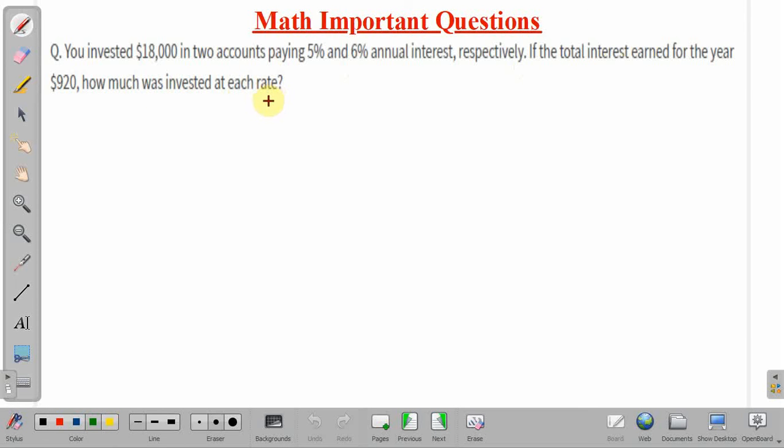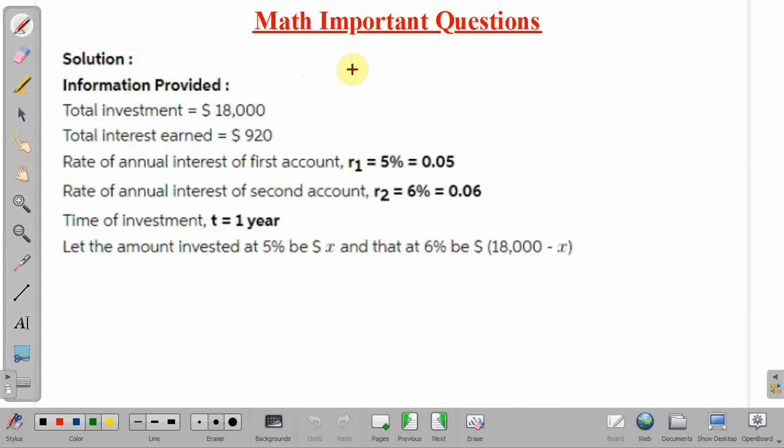So, a certain amount will be invested in one account paying 5% and the remaining amount is invested at 6%. How can we solve this? Total investment given is $18,000 and total interest is given as $920.